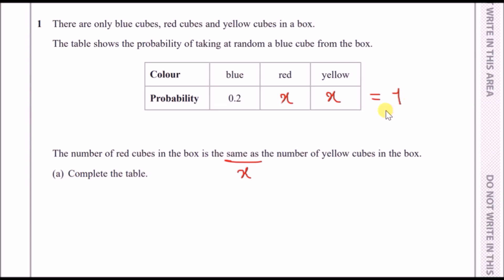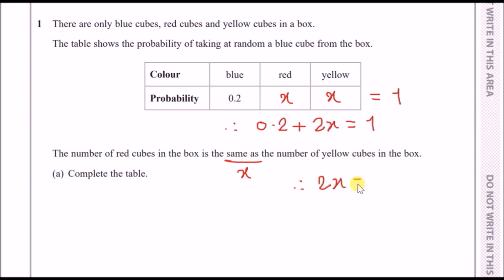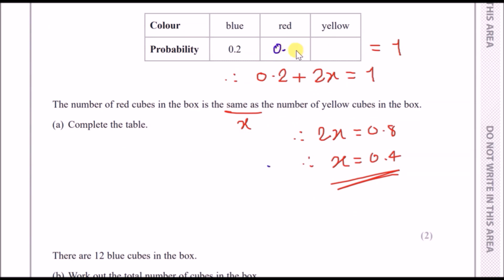Sum all probabilities and set them equal to one to form an equation. Rearrange to make 2x the subject — subtract 0.2 from both sides, then divide by 2. You should get 0.4 for both red and yellow. That's part 1a done.